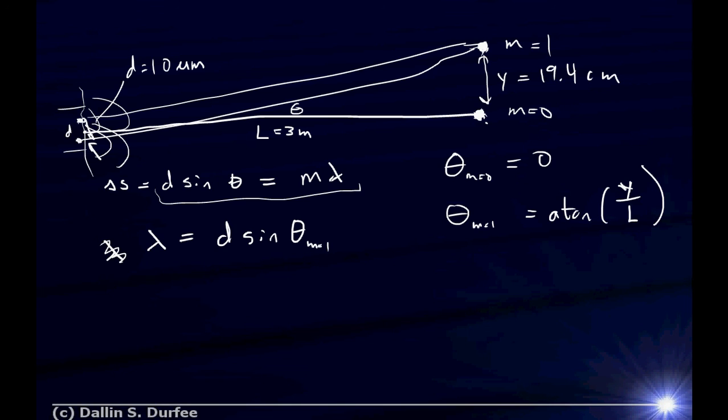And, well, I know d, right? And theta for m equals one is just the arctangent of y over l. So I just plug that all in here. d is 10 microns times the sine of the arctangent of y is 19.4 centimeters.